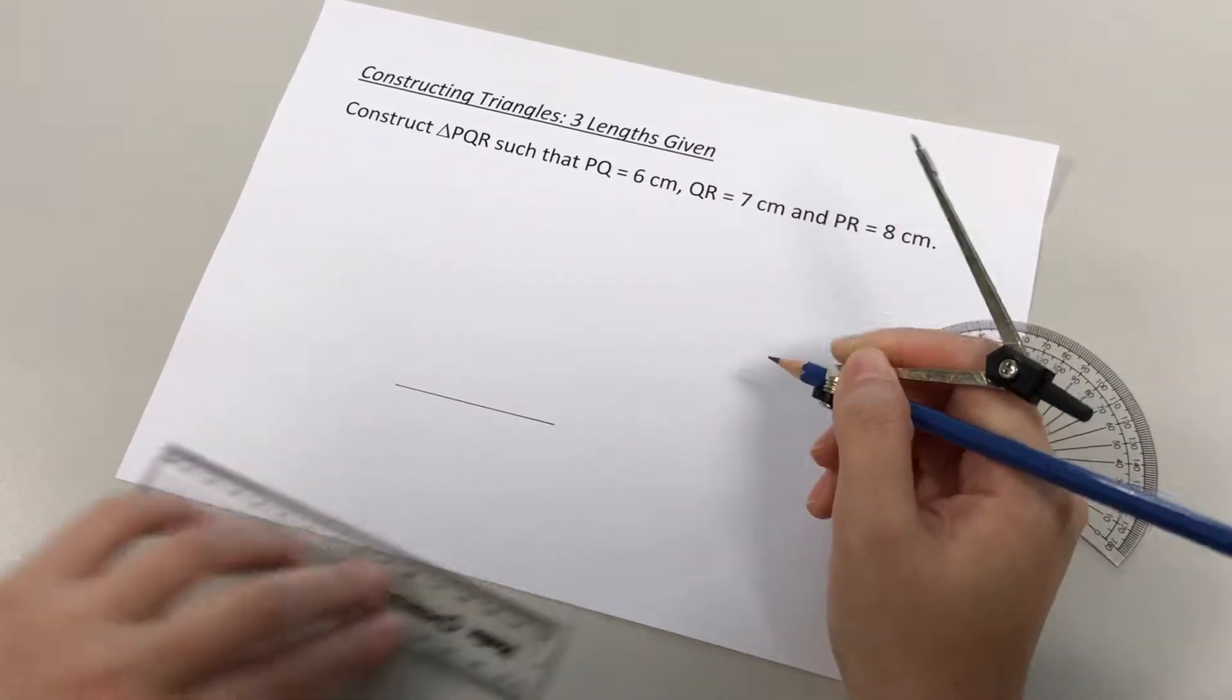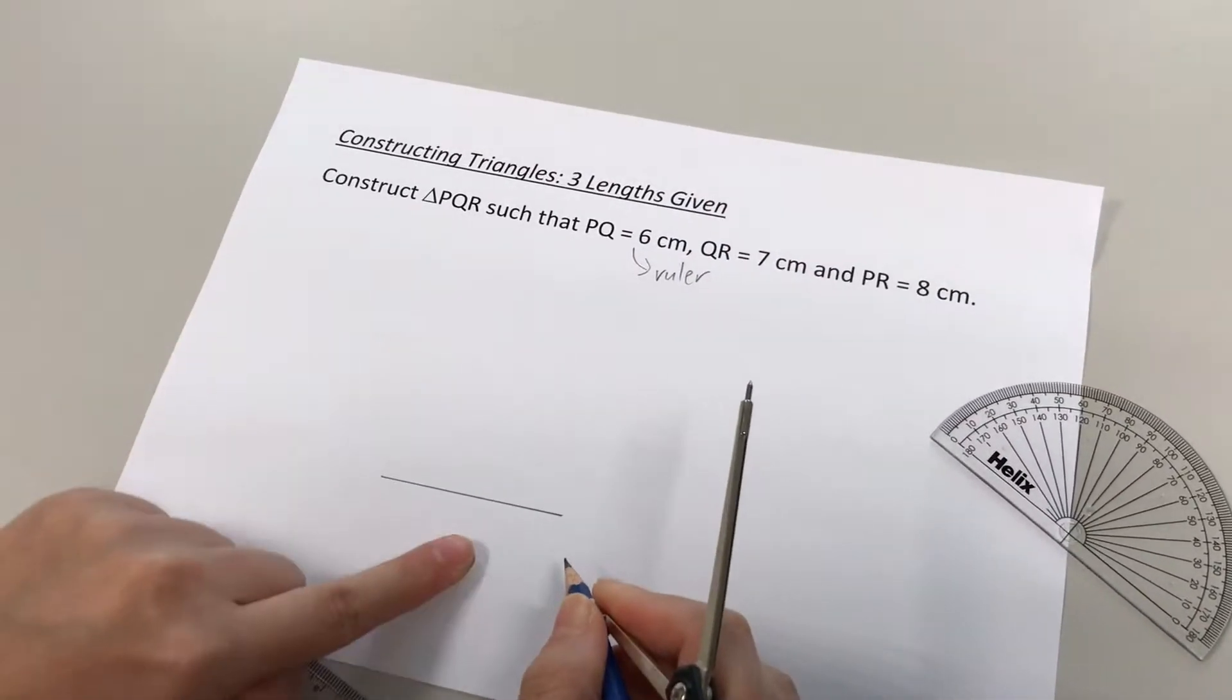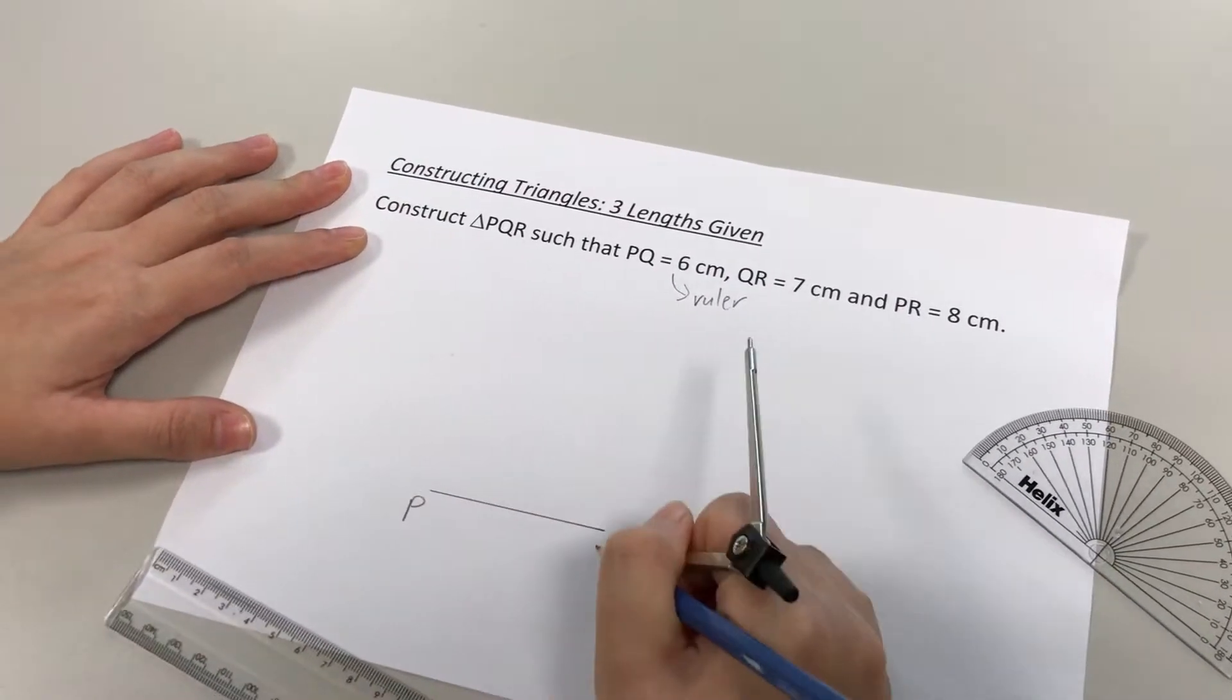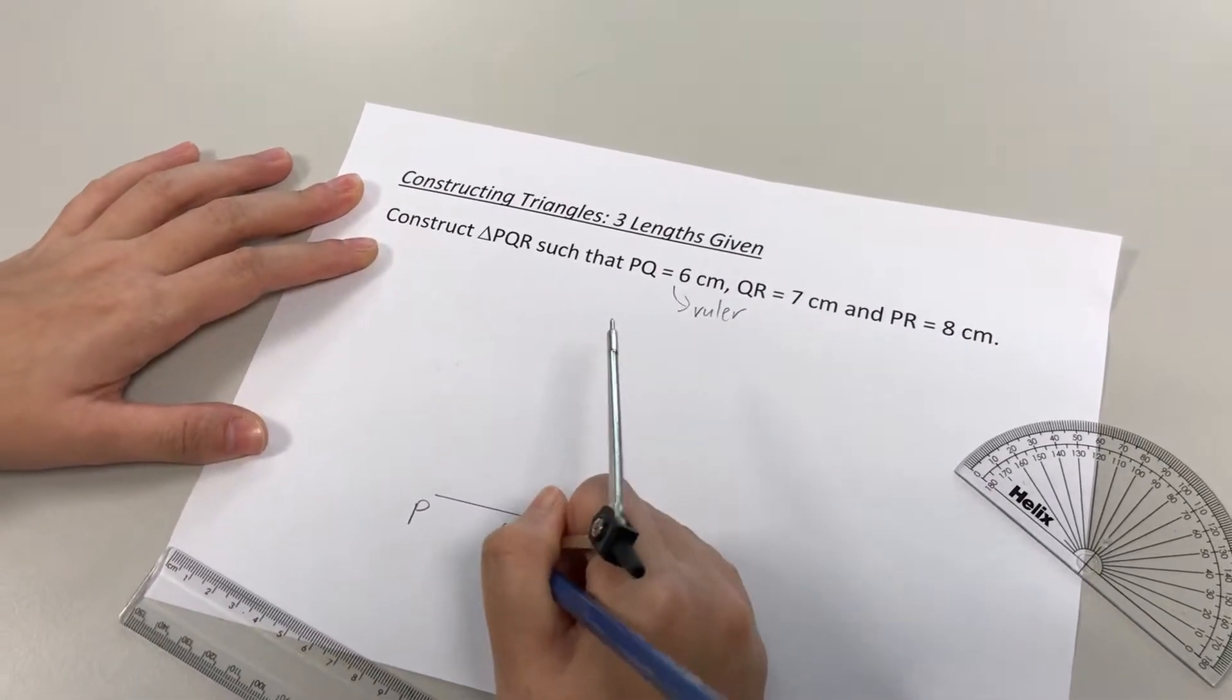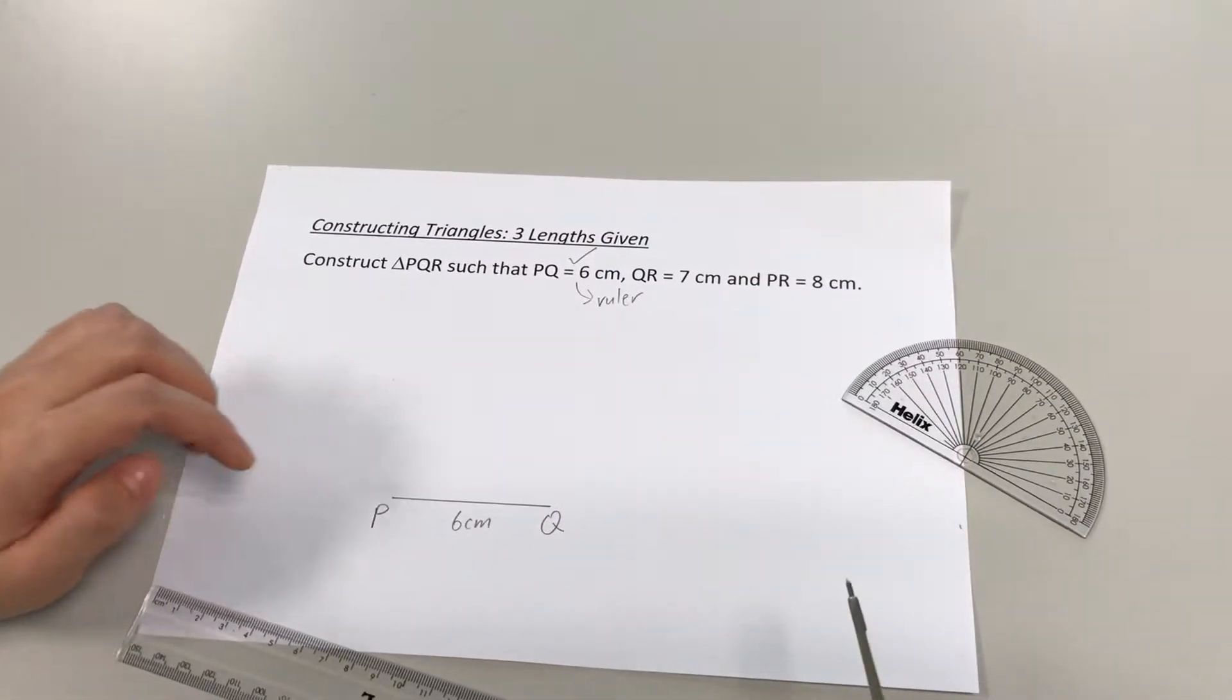All right, and there we go. So this is done using a ruler. This is my 6cm line. So once I've drawn it, make sure you label it straight away with the points as well as the length. Okay, so we are done with the first information given.